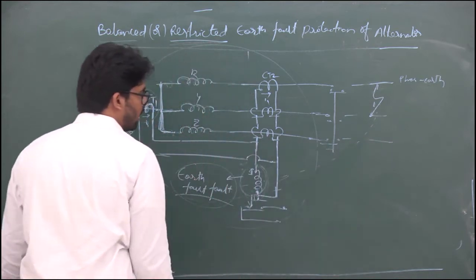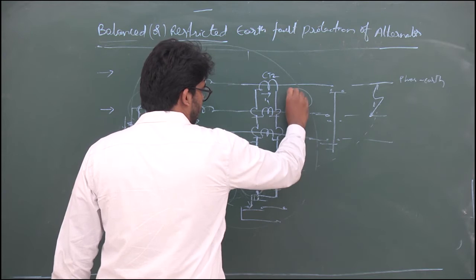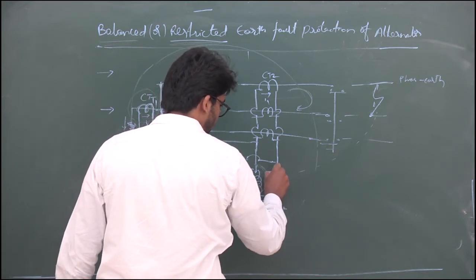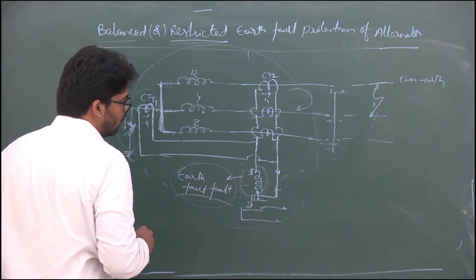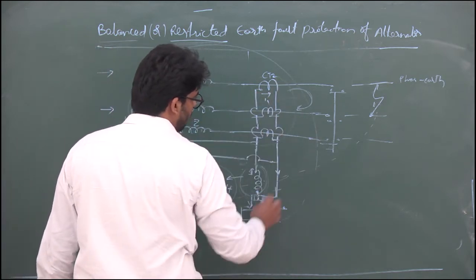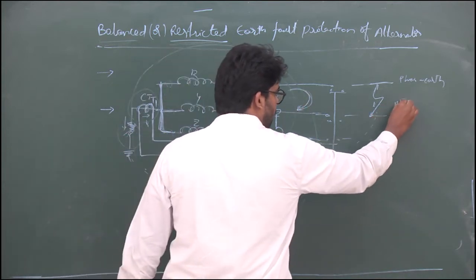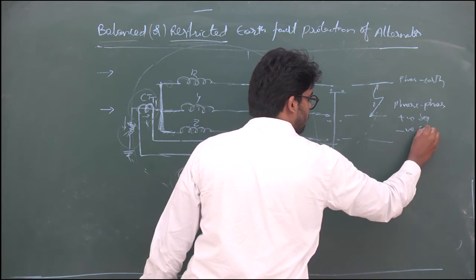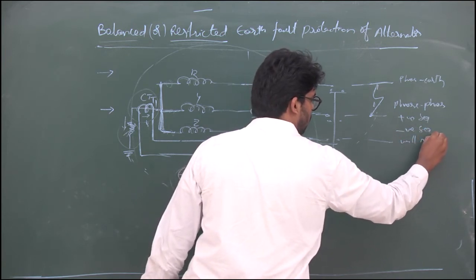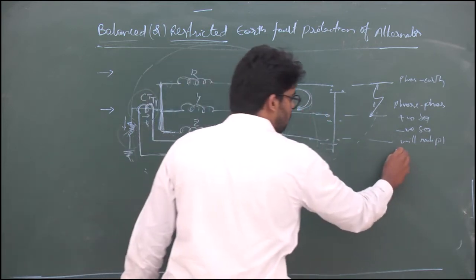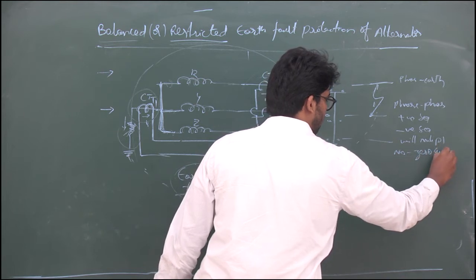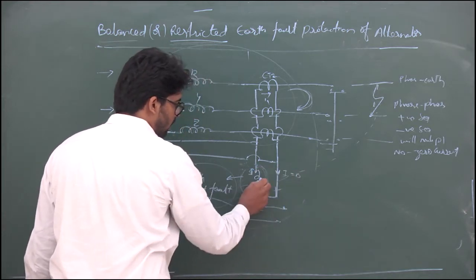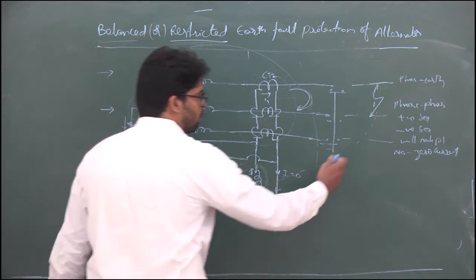Now, if a phase-to-phase fault accidentally occurs, the current is flowing in that loop only, so there is no possibility of current flowing through the relay coil. If we take the sum of currents for a phase-to-phase fault, all the positive sequence and the negative sequence components will get nullified due to circulation only. So there is no possibility of zero sequence current — zero current will not flow through the coil, therefore this coil will not operate for external faults.